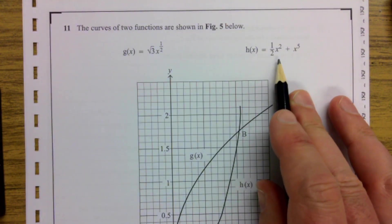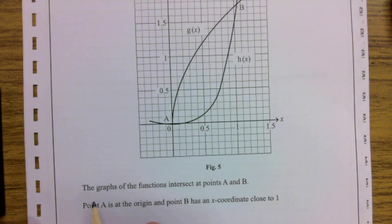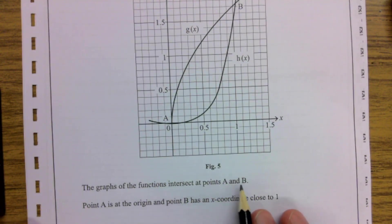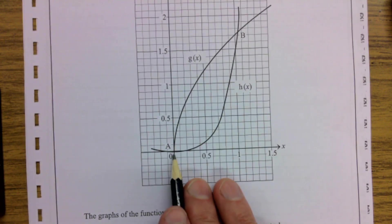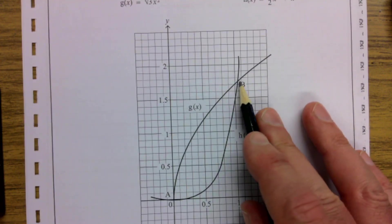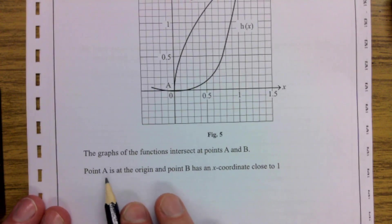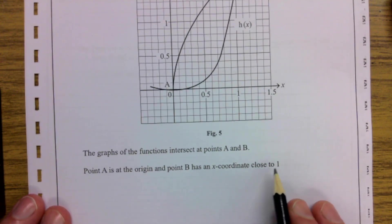We have this function here and this function here, g(x) and h(x). The graphs of the functions intersect at points A and B. So here's A down here, I think that's (0,0) probably. And then here, this one's kind of quite close to 1. It says point A is at the origin, point B has an x-coordinate close to 1.